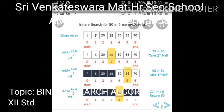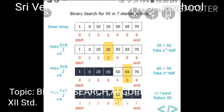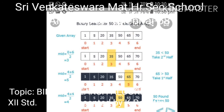How can you find a search element in a given array? For example, if your search element is 50, you need to find where 50 is located among these seven elements. Index values always start from 0. So index 0 contains 1, index 1 contains 5, index 2 contains 20, index 3 contains 35, index 4 contains 50, and the sixth index contains 70.